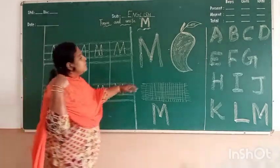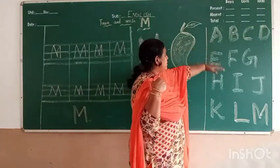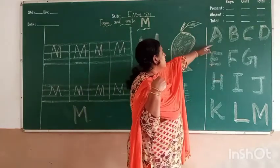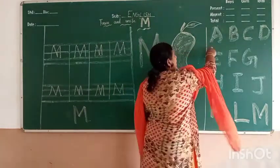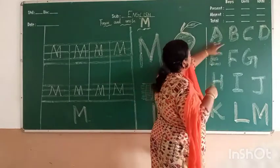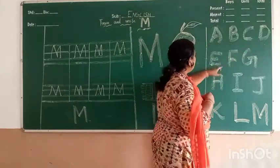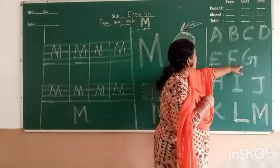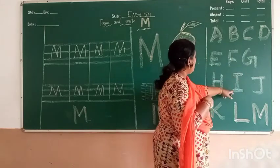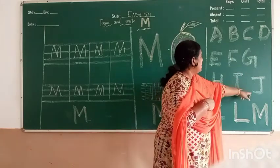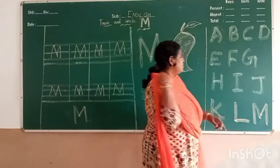So, I will repeat the alphabets spread to M. Speak with me: A, B, C, D, E, F, G, H, I, J, K, L, M.